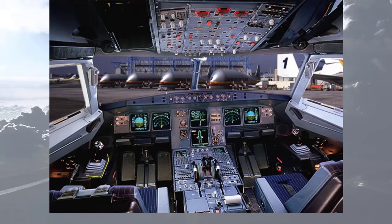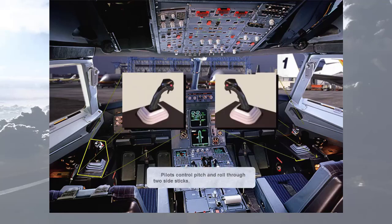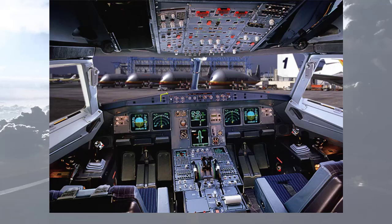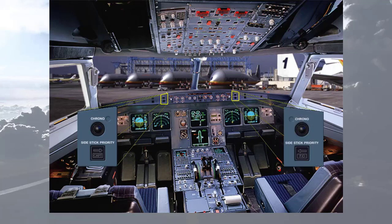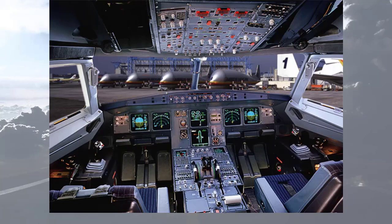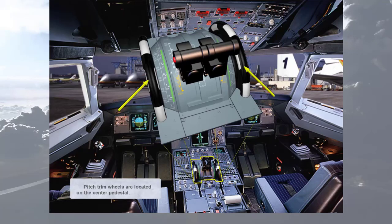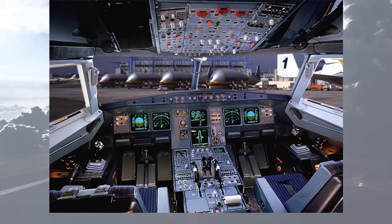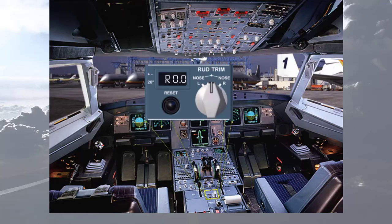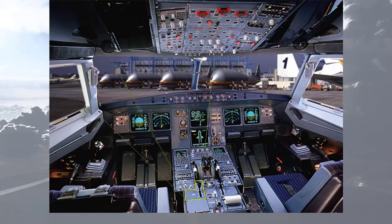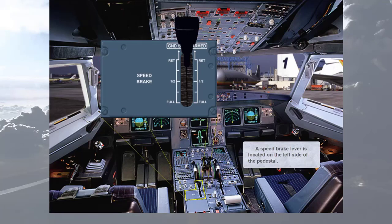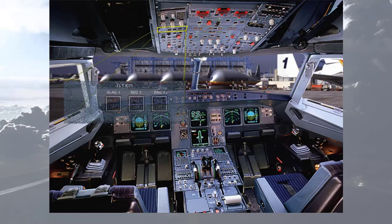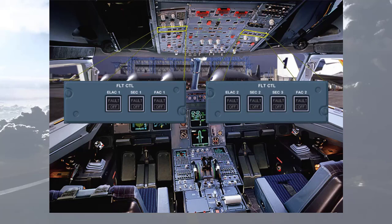Pilots control pitch and roll through two side sticks. There are associated side stick priority lights. Side sticks and priority lights will be explained in a separate module. Pitch trim wheels are located on the centre pedestal. There are two sets of conventional rudder pedals. A rudder trim panel is located on the pedestal. A speed brake lever is located on the left side of the pedestal. In addition, there are two panels located on the overhead panel to control the flight control computers.